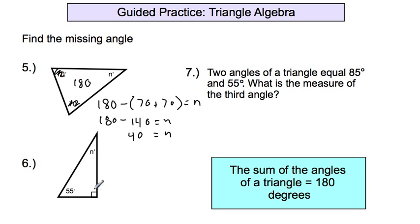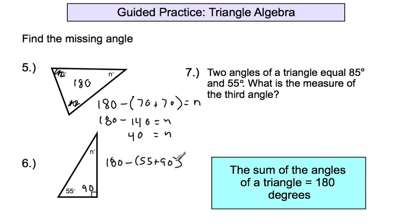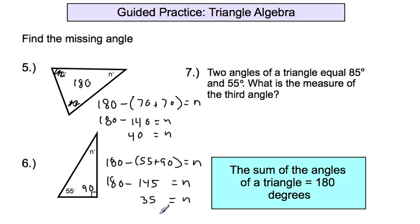Number 6: you have two angles you know and one you don't. One angle is 55 degrees, and the other looks unknown — but it's a right angle, so it's 90 degrees. Take 180 and subtract 55 and 90. Adding them together gives 145, then 180 minus 145 equals N. So N equals 35 degrees.